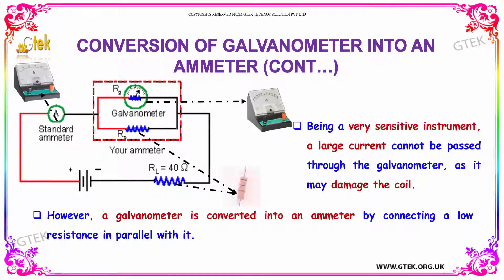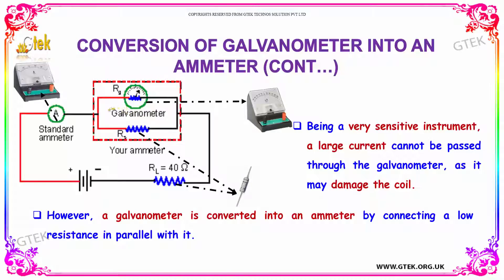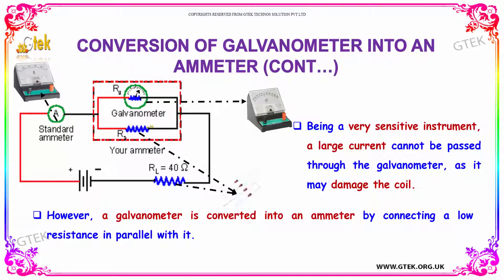Being a very sensitive instrument, a large current cannot be passed through the galvanometer as it may spoil or damage the coil. However, a galvanometer is converted into an ammeter by a low resistance which is connected in parallel with it.